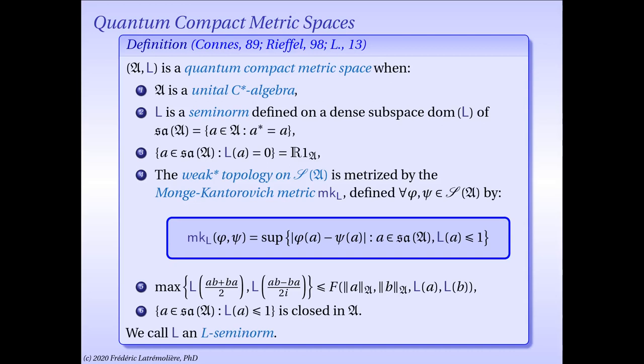We also require that the closed unit ball for our semi-norm L is closed in norm in the C-star algebra. We call a semi-norm satisfying all these properties an L-seminorm, for Lipschitz. In particular, if A is the C-star algebra of complex-valued continuous functions on a compact metric space and L is the associated Lipschitz semi-norm, then (C(X), L) is an example of a quantum compact metric space. Other examples include quantum tori, AF algebras, Podleś spheres, curved quantum tori, hyperbolic group C-star algebras, nilpotent group C-star algebras, and many more.